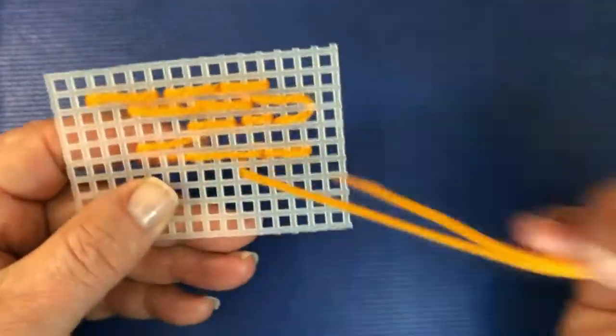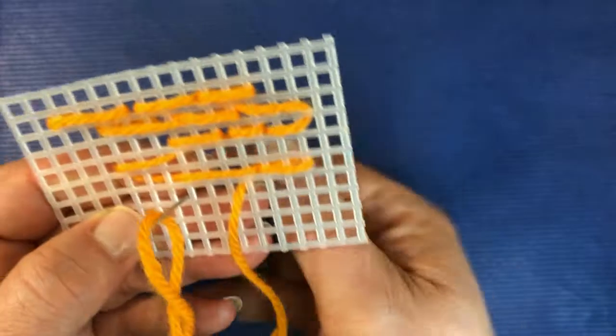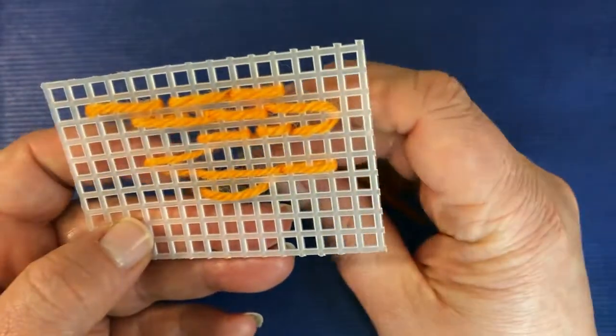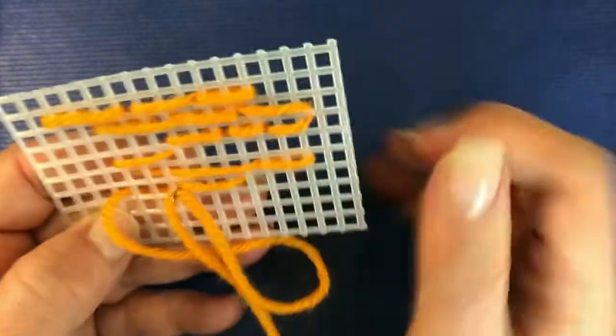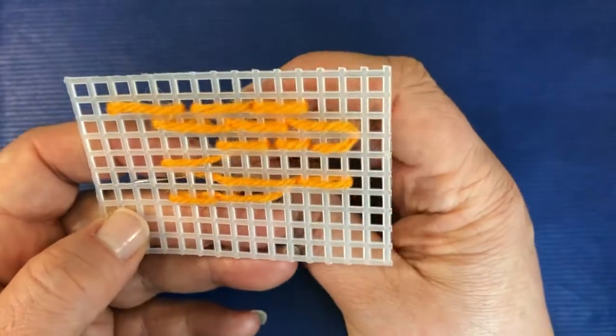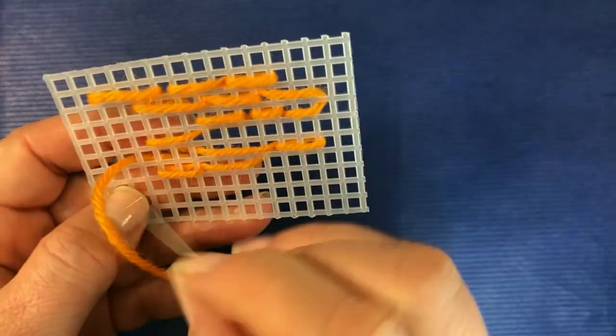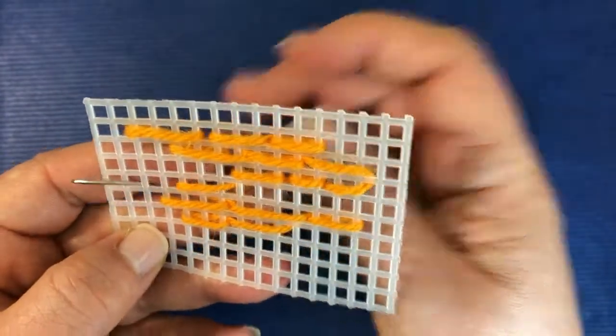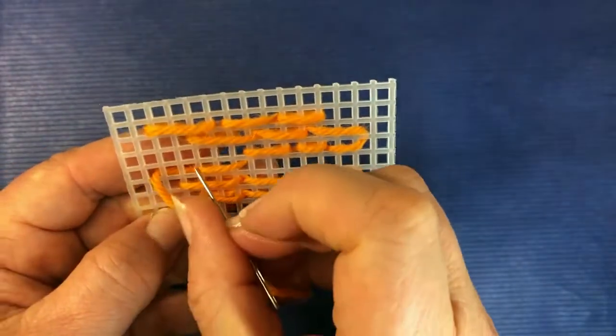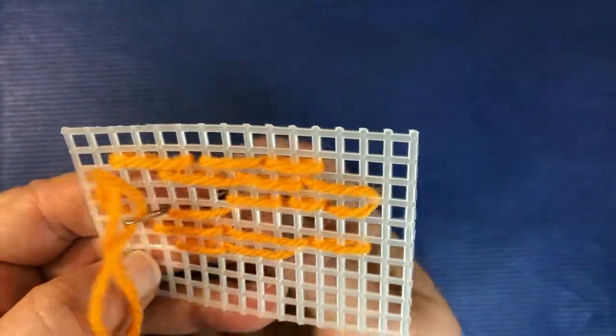What I really like about long stitch is that you can go forward and back. It doesn't really matter which way you're going so it's a great stitch if you want to cover the area quickly but you also want to add texture.